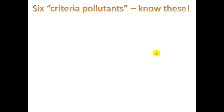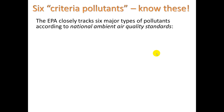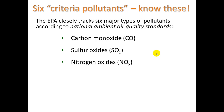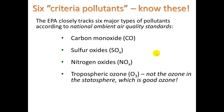There are six criteria pollutants, and these are definitely on the AP test. The EPA closely tracks these six major types of pollutants according to National Ambient Air Quality Standards: carbon monoxide, sulfur oxides, nitrogen oxides, tropospheric ozone O3, particulate matter, and lead. The oxygen we breathe is O2; O3 is called ozone. The ozone you breathe in during smog is bad, but this is not the ozone in the stratosphere, which is good. Ozone is ozone — when it's in the stratosphere, it's good; when it's in the troposphere, it's bad.